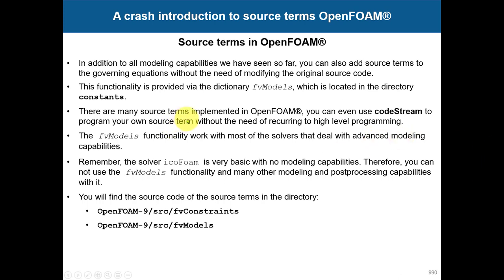This functionality is provided using fvModels dictionary, which is located in the directory constant. In previous versions it used to be fvOptions, so now they changed it. There are many types of sources that you can add in OpenFOAM and you can even program your own using code stream.